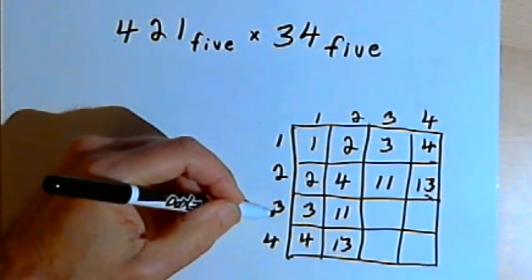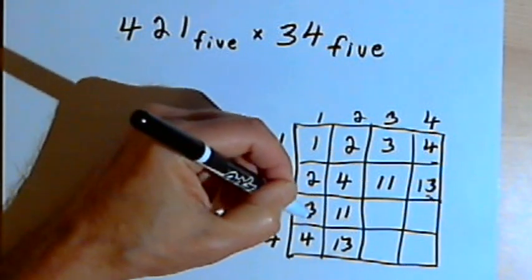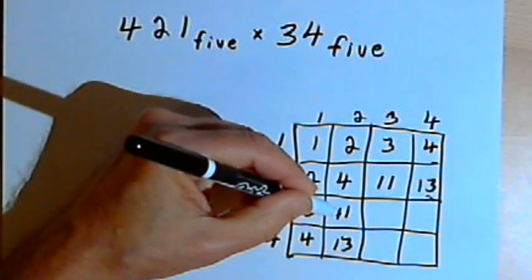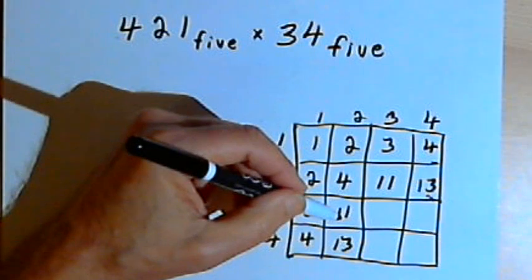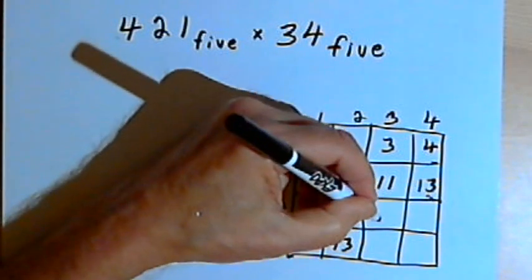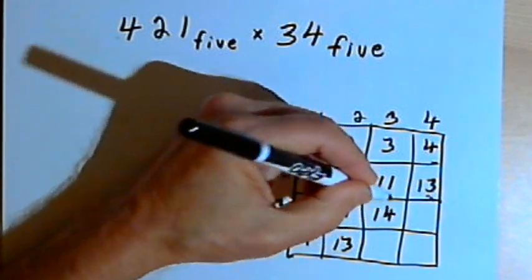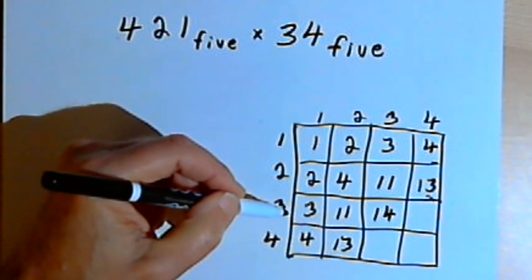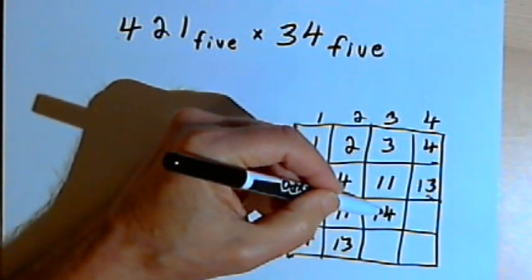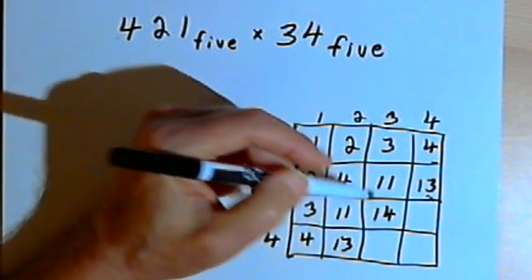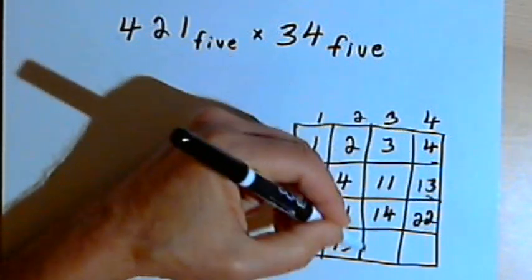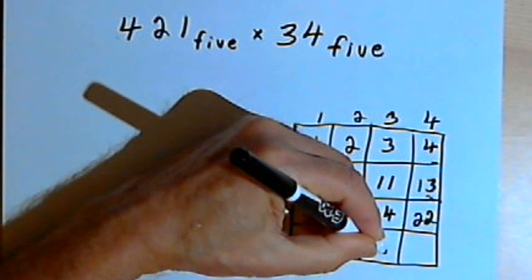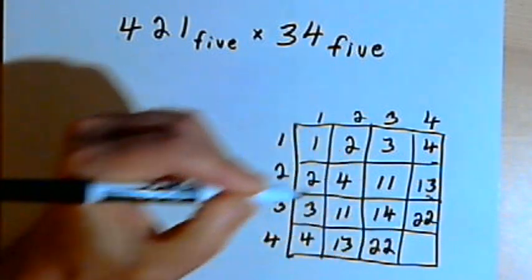Going to the third row, I've got a 3, a 11. I want to count up 3 more from 11. So after 11, I've got 12, 13, 14. I want to count up 3 more from that. So after 14, I'll have 20, 21, 22. And I'll use that information to fill in my third column as well.